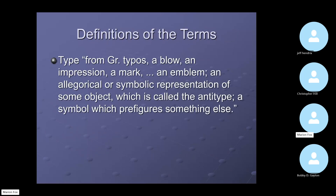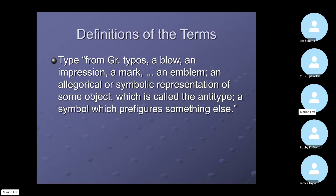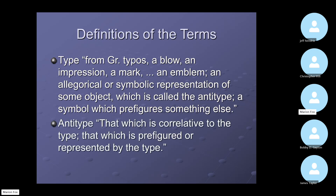The word 'type,' according to Merriam-Webster, is from Greek — tupos or typos — meaning a blow or impression, a mark, an emblem, an allegorical or symbolic representation of some object (which is called the antitype), a symbol which prefigures something else. It's a good definition from English dictionaries.